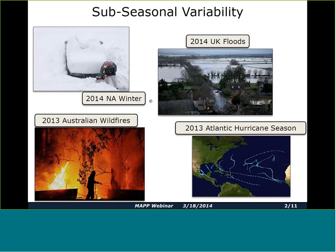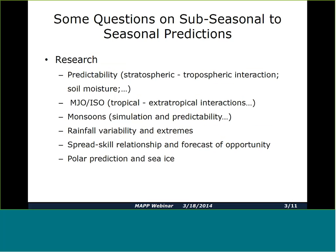On the other hand, the 2013 Atlantic hurricane season was one of the lowest, and that kind of extreme probably had some benefit to society. So these things happen both in negative or positive ways in terms of their influence on society. One would like to predict these things with a shorter lead time or with some skill or success. That's what this project is about.